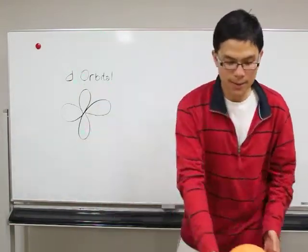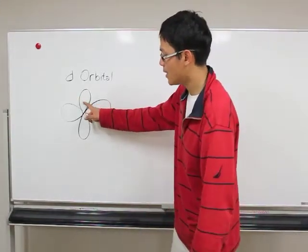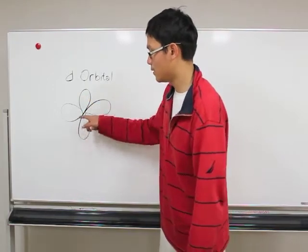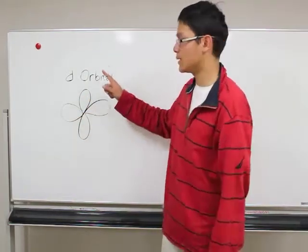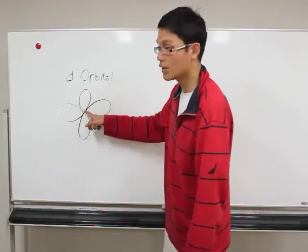And the next one is the D orbital. D orbital is more complex, so I just draw it here. It's like a clover and it has four spheres. And this is one D orbital. So two electrons can be found anywhere in the clover, and the nucleus is in the center.